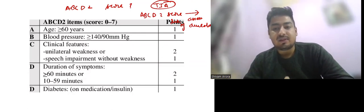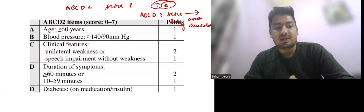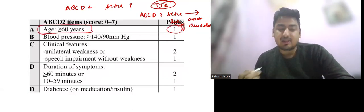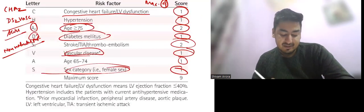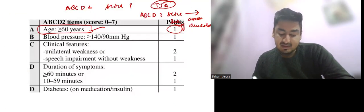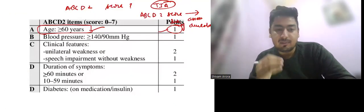A is for age more than 60, score of 1. In CHA2DS2-VASc, age more than 75 has a score of 2, and 65 to 74 has a score of 1, but here age more than 60 has a score of 1. This is an important differentiation. B is for blood pressure: systolic more than 140 or diastolic more than 90 has a score of 1.